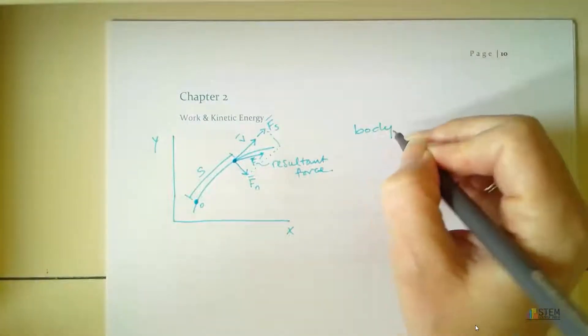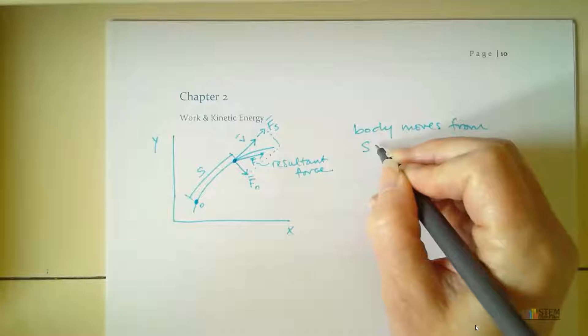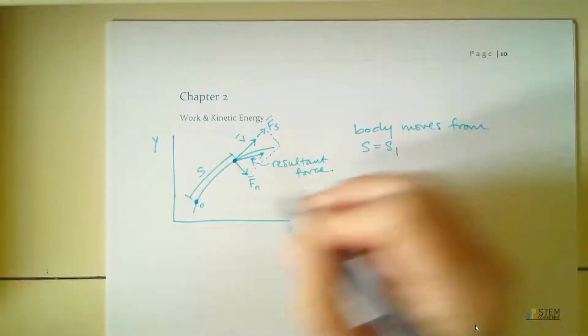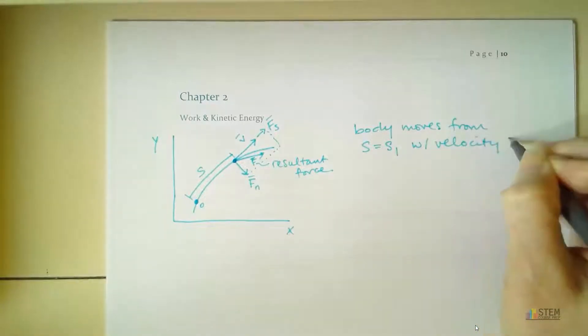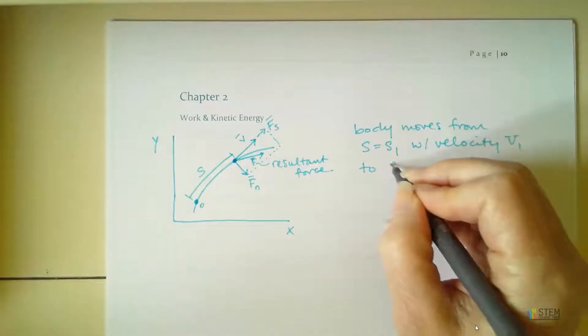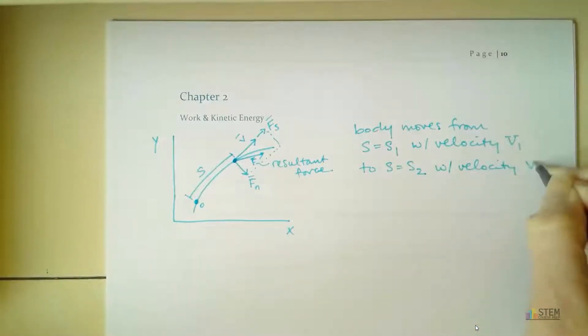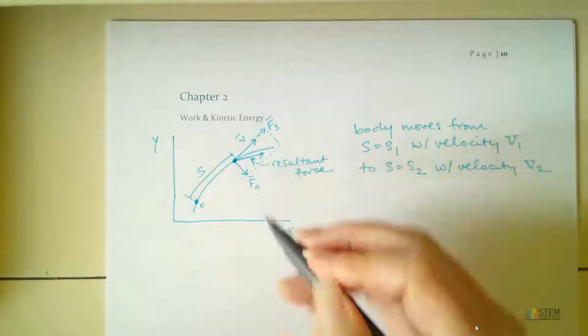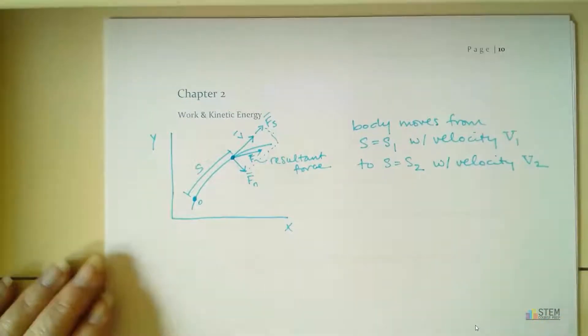Let's write down what we just said was happening. Our body is moving from the initial s value, let's call it s1, that's at this point O right here, and at that point it's got a velocity v1. For velocity, I'm going to write it as this capital V. So it's moving from that point to s equals s2 with a velocity v2. Now, we've got these forces, Fs and Fn. We are mainly going to focus on Fs because that is our tangential force.